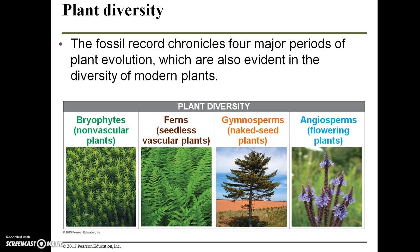Let's move on to plant diversity. The fossil record chronicles four major periods of plant evolution, which are also evident in the diversity of modern plants, each category showing an increasing amount of complexity. Bryophytes are the non-vascular plants — they do not have tube-like cells to conduct water and nutrients. Ferns have vascular tissue but lack seeds. Gymnosperms have vascular tissue and naked seeds. Angiosperms have vascular tissue and more advanced seeds.